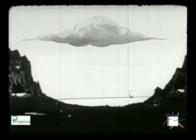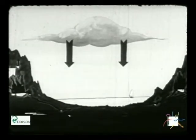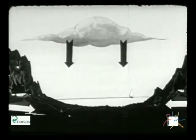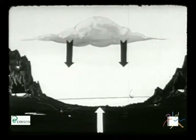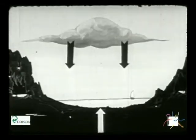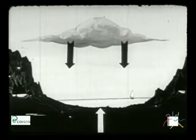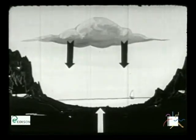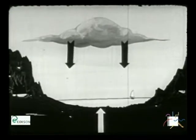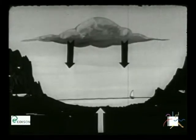Se poi un lago chiuso manca anche di immissario, viene chiamato cieco. Il lago cieco è alimentato dall'acqua piovana e da sorgenti sotterranee che impediscono il prosciugamento del bacino sotto l'azione del sole, che infatti farebbe evaporare tutta l'acqua ivi raccolta.